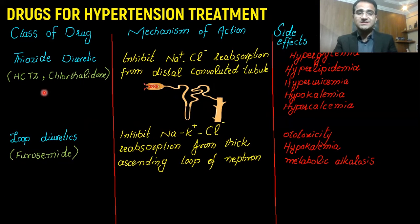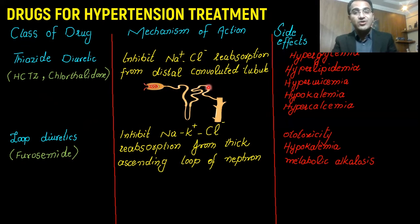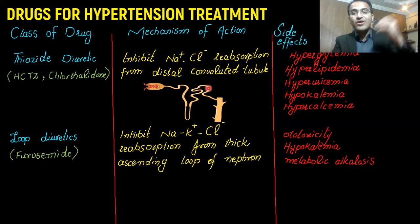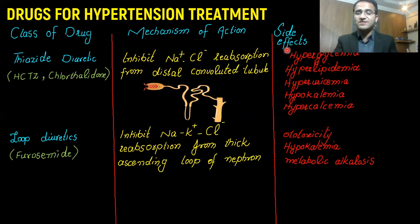Moving to diuretics — thiazide diuretics include hydrochlorothiazide and chlorthalidone. They inhibit sodium and chloride absorption from the distal convoluted tubules. When sodium and chloride are not absorbed, they are lost in urine, and water follows salt — so water and salt are lost from the body, resulting in lower blood pressure. The side effects of thiazide diuretics include hyperglycemia, hyperlipidemia, hyperuricemia, hypokalemia, and hypercalcemia.